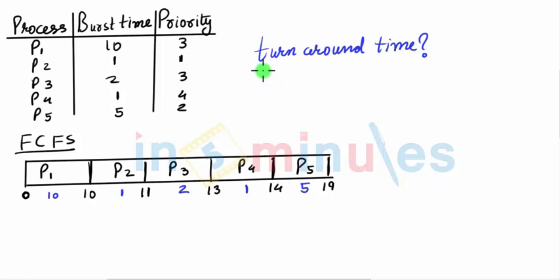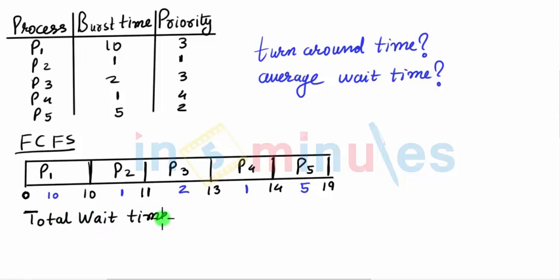Let's start with wait time, which we'll call total wait time. When we add wait time to the burst time, that becomes the turnaround time. So let's calculate for each one.